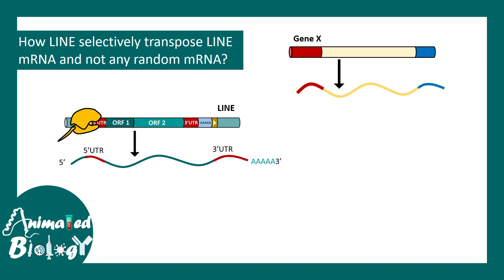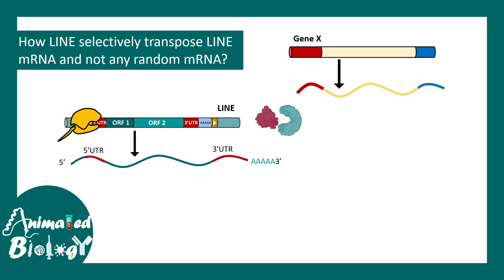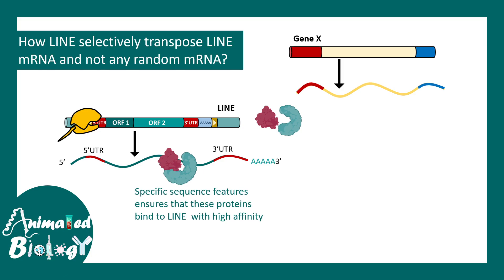But here is a problem: how does a LINE selectively take the LINE mRNA and insert it elsewhere in the genome? These mRNA intermediates are very similar to any random mRNA — say, mRNA for gene X. So how does the LINE make sure it doesn't translocate gene X's mRNA instead of its own? In theory, the proteins encoded by ORF2 can bind to both mRNAs, but in real life it has been found that ORF2-derived proteins have a higher binding affinity toward LINE mRNA as soon as they are synthesized, because there are specific sequences in the LINE mRNA that confer that affinity. Thereby, a random transcript getting integrated into a random region of the genome is very rare — it happens, but the occurrence is really rare.